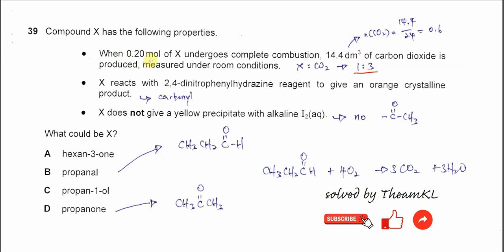This means we know that compound X must be a three carbon organic compound. So it cannot be A now. The answer could be B, C, or D.